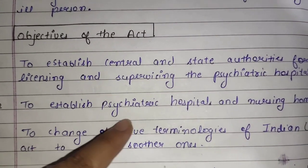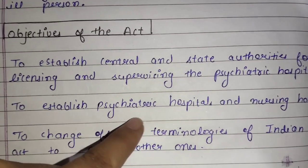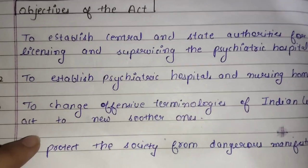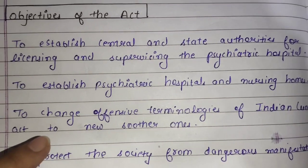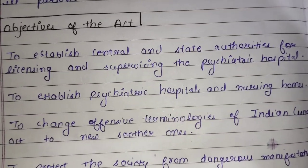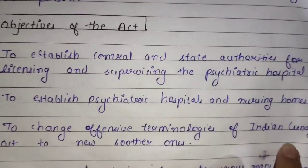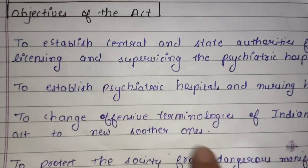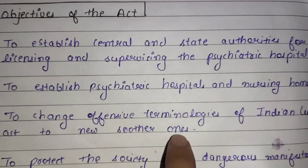The second objective is to establish psychiatric hospitals and nursing homes. The third objective is to change the offensive terminologies of the Indian Lunacy Act to new, smoother ones.